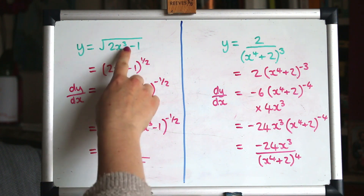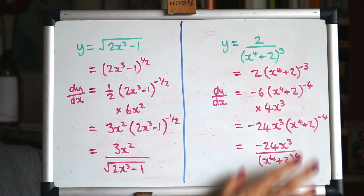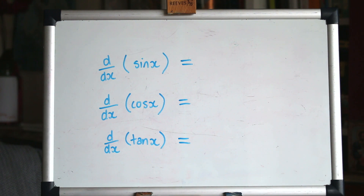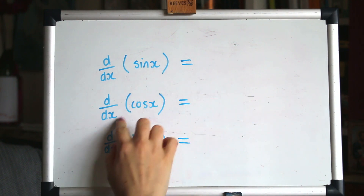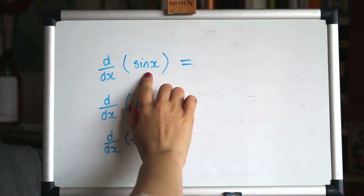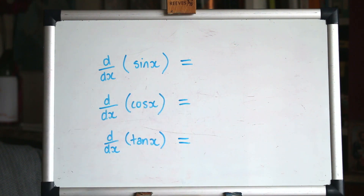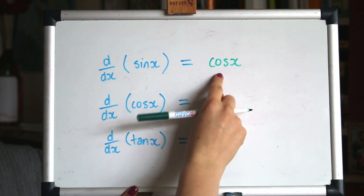They do look pretty impressive, don't they? Before you learn the chain rule, those things look horrific to differentiate — but suddenly you can. Now I want to look at differentiating sine, cos and tan using the chain rule. The notation d/dx of whatever you're trying to differentiate: when you differentiate sin x you get cos x — a straight swap. When you differentiate cos you get negative sine. And tan goes to something completely different — it goes to sec².